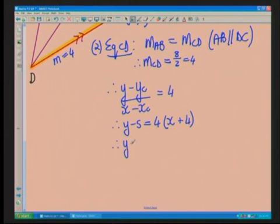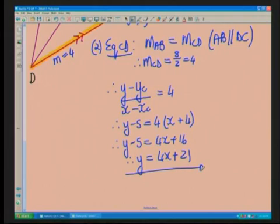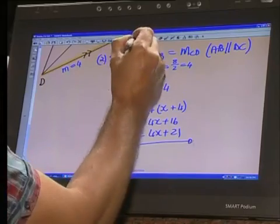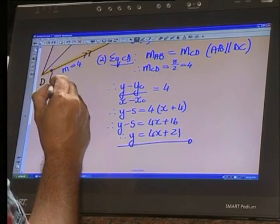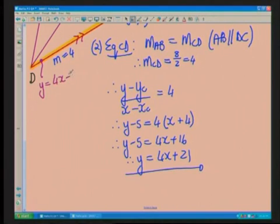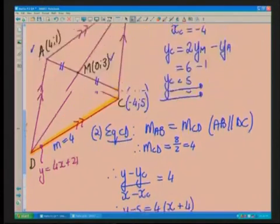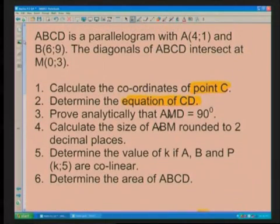A bit of cleaning up: Y minus 5 is 4X plus 16. Our 5 jumps to the other side. We've got Y is equal to 4X plus 21. And that is the equation of DC. We found it by using the gradient of the line AB. Why could we? Because those two sides were parallel. And then we had the coordinates for C, which we just calculated. Let's put that at the line so that if we need it later on, we know what this equation is: Y is equal to 4X plus 21.